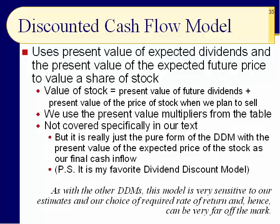Remember the first example with three yearly dividends and then the company went out of business — which we said is pretty ridiculous? We're going to do exactly that, but assume the company doesn't go out of business. We'll look at what we believe the price of the stock will be after three or four years. So the formula becomes the present value of future dividends plus the present value of the stock price when we plan to sell.